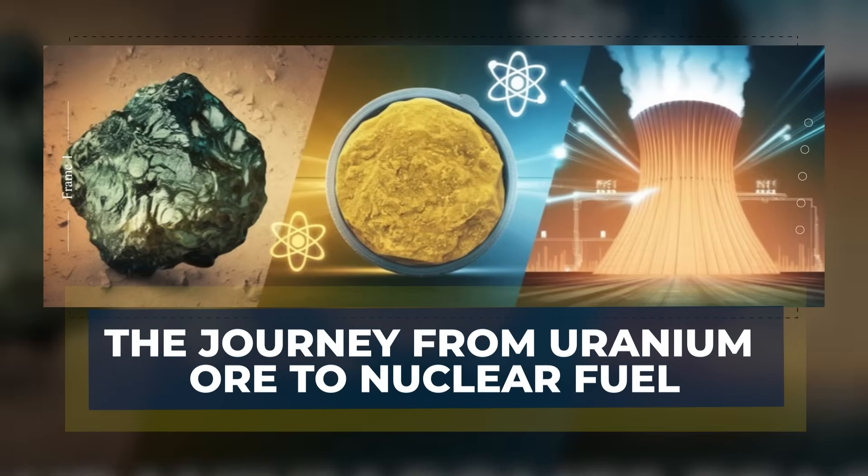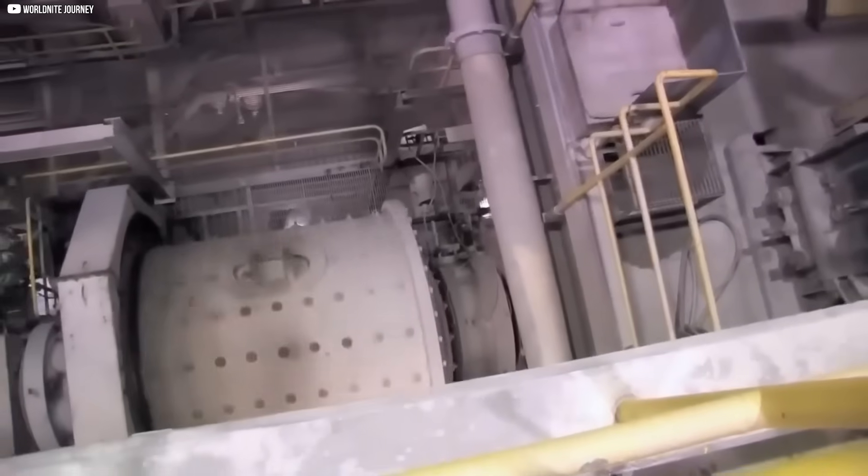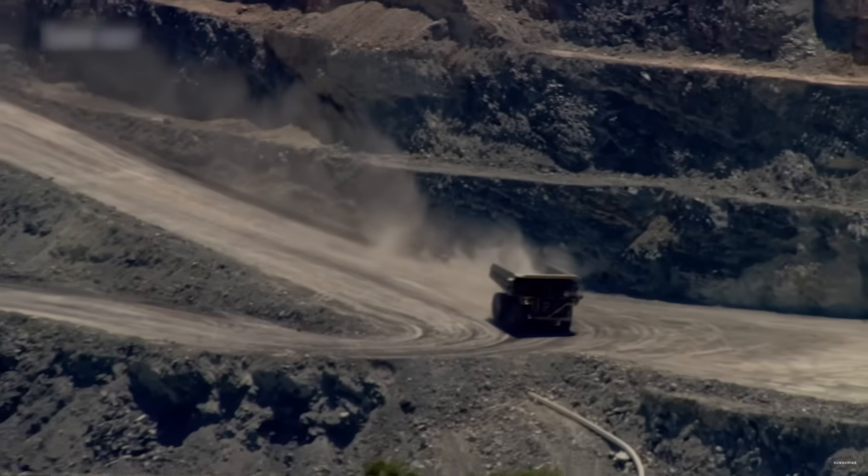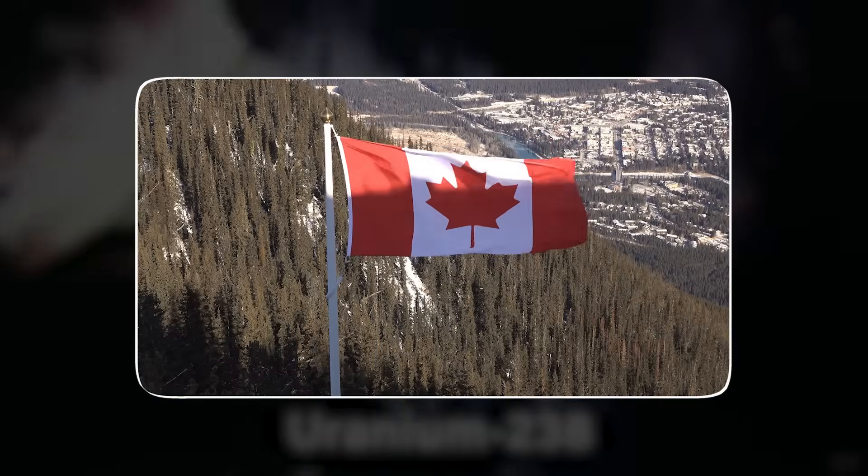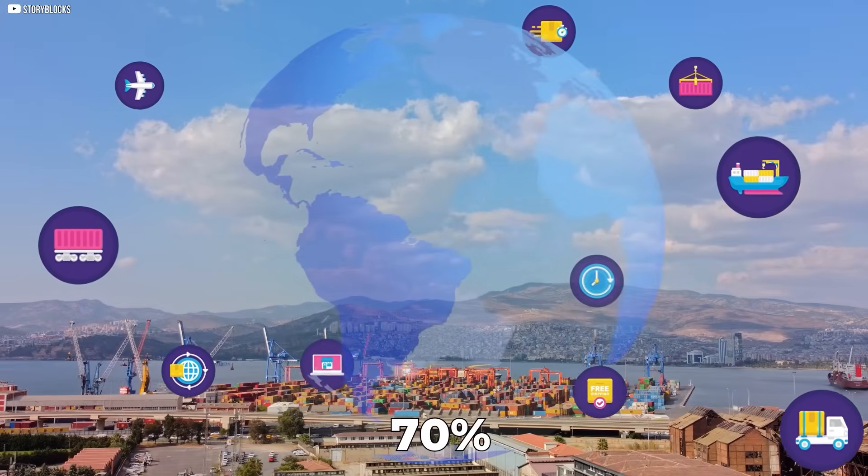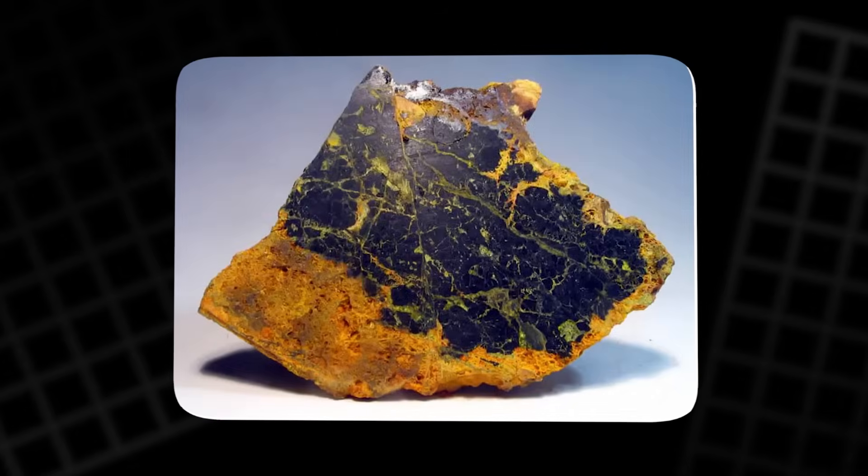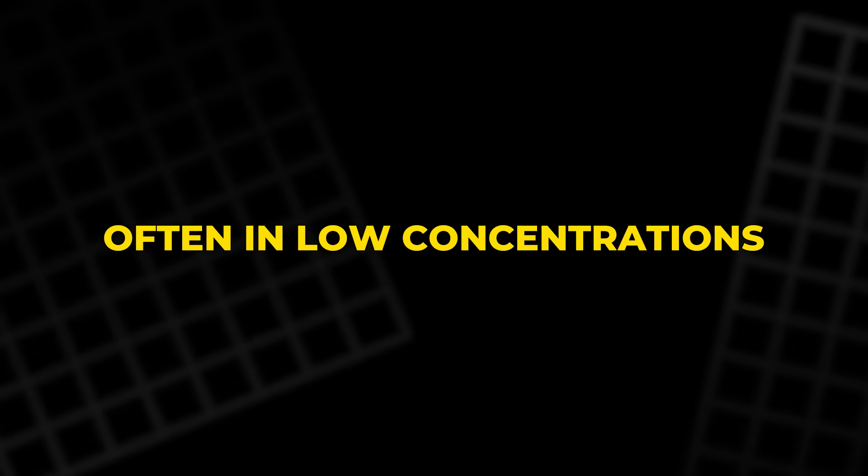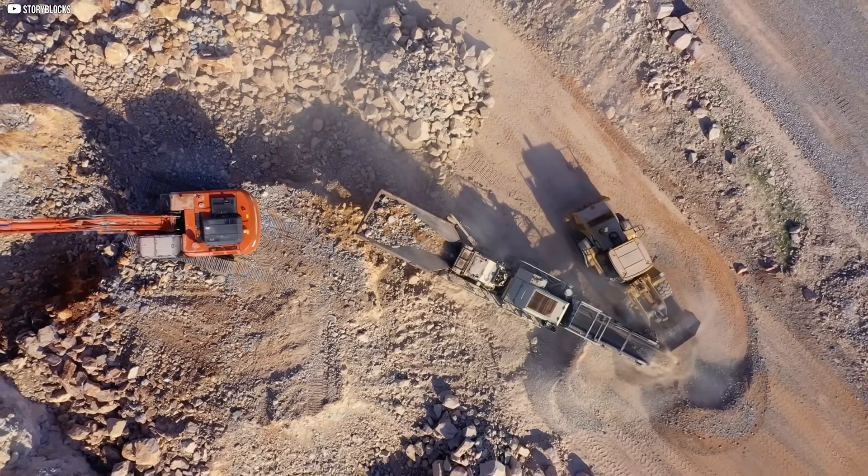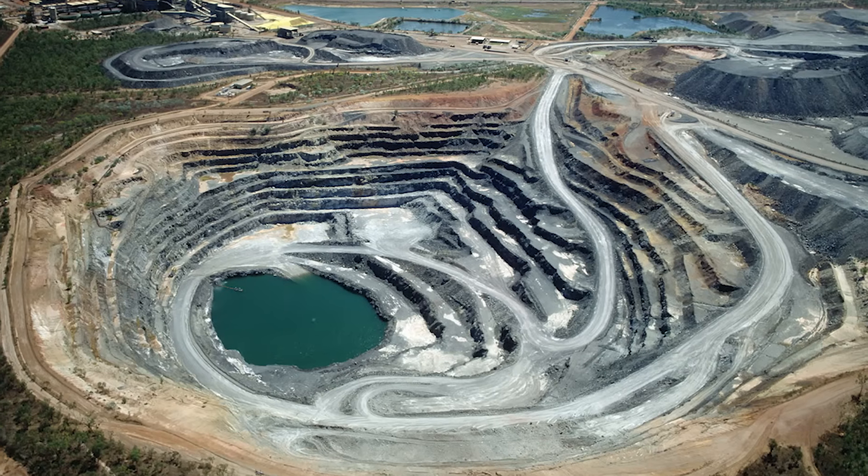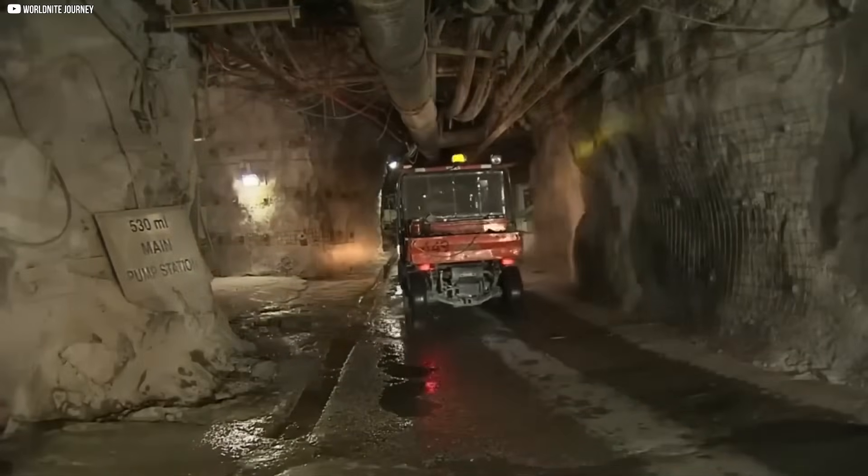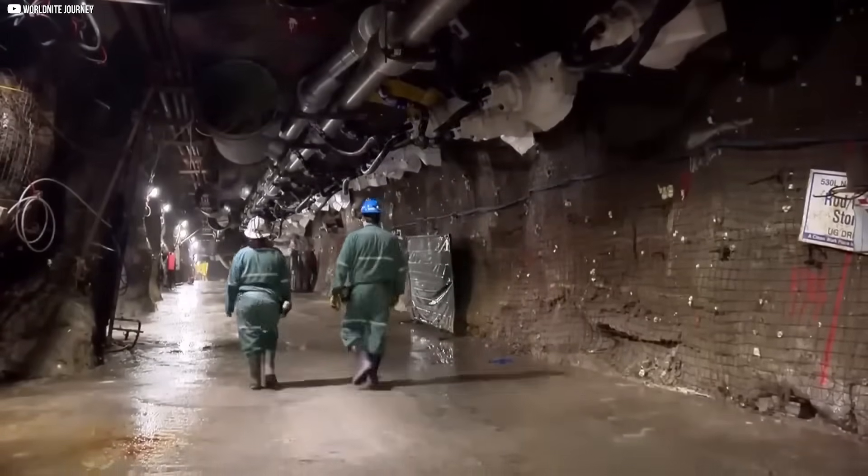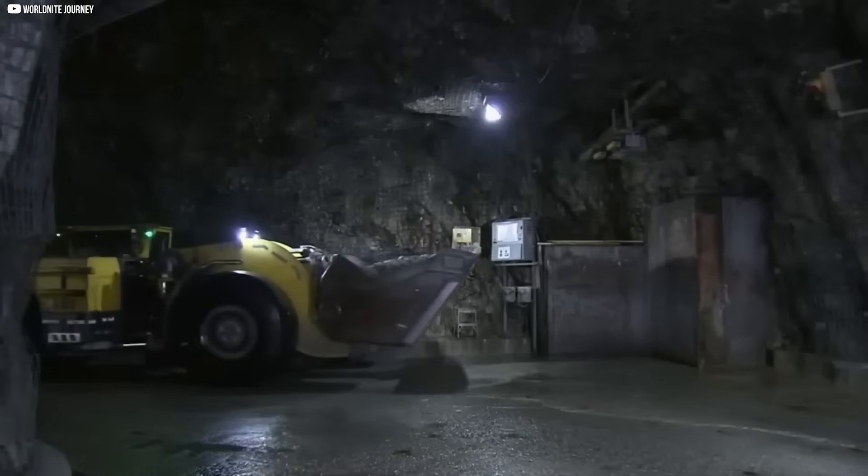The journey from uranium ore to nuclear fuel. The process of turning uranium into usable nuclear fuel begins deep within the Earth, where uranium is mined from deposits in regions such as Australia, Kazakhstan, and Canada, which together account for 70% of the world's supply. Uranium is typically found in minerals like uraninite or pitchblend, often in low concentrations. The extraction process starts with mining, which can either be done through open-pit methods, where massive excavators remove layers of Earth, or underground mining, where tunnels are dug to reach deeper deposits.